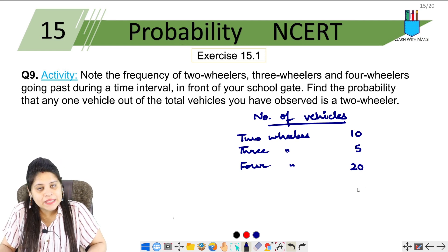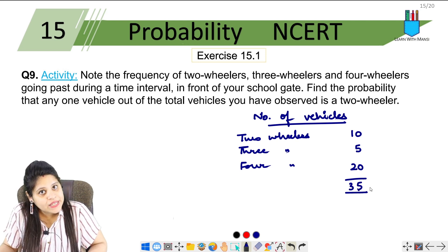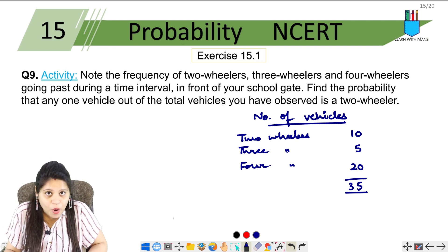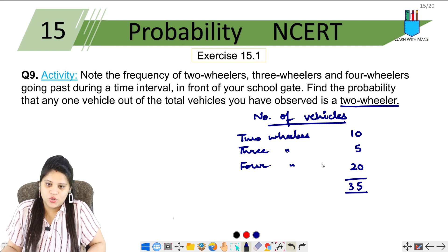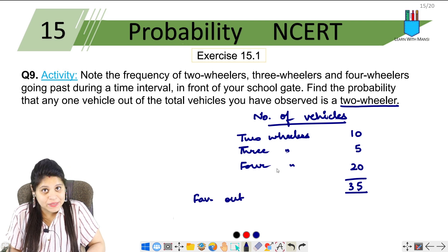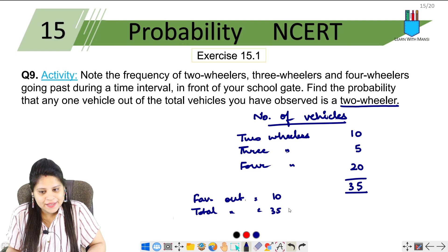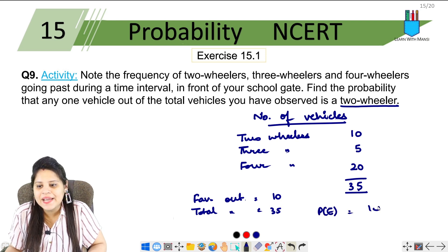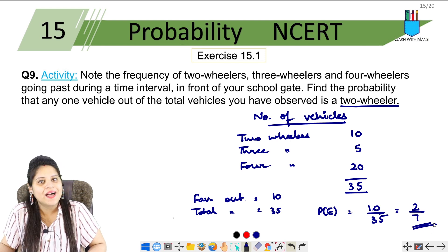So these three types add up. How many total vehicles did you observe? Ten plus five plus twenty equals thirty-five vehicles total. Now they are asking for the probability of a two-wheeler. Favorable outcomes are ten, total outcomes are thirty-five. So the probability will become ten upon thirty-five. You can simplify it — divide by five — to get two upon seven. So this is the answer.